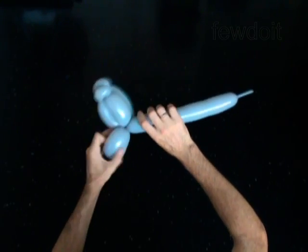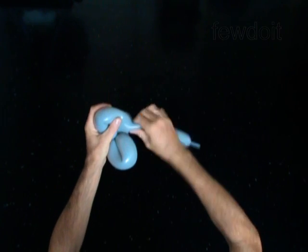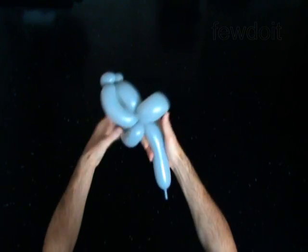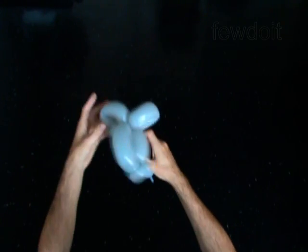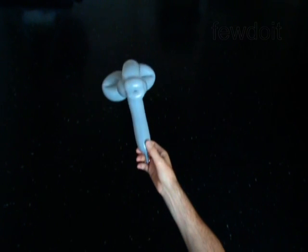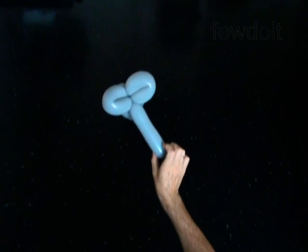Twist the seventh six inch bubble. Lock both ends of the seventh bubble in one lock twist. The rest of the balloon in the eighth bubble is the neck of the baby deer.